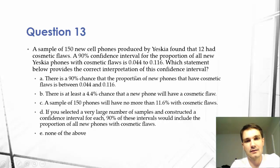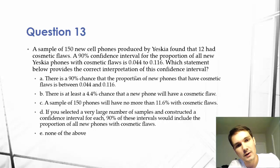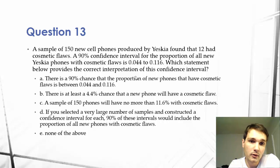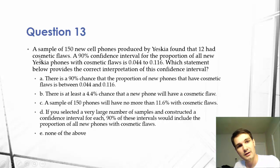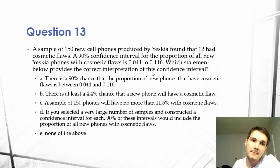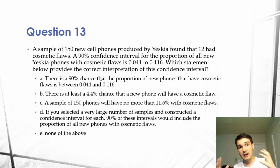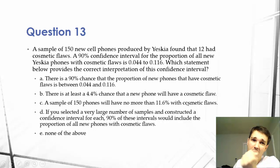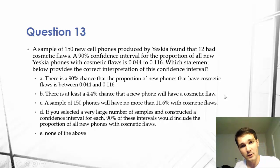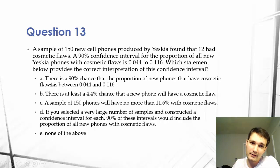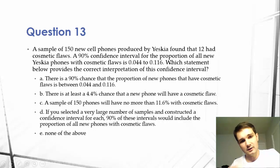Answer A: there is a 90% chance that the proportion of new phones that have cosmetic flaws is between 0.044 and 0.116. We have 90% confidence — based on the normal distribution — that it is between these numbers. It isn't a chance; it's confidence. This is a good answer, but it's not going to be the best here. Pay attention to the difference between this and the correct answer so you can really understand what a confidence interval is.